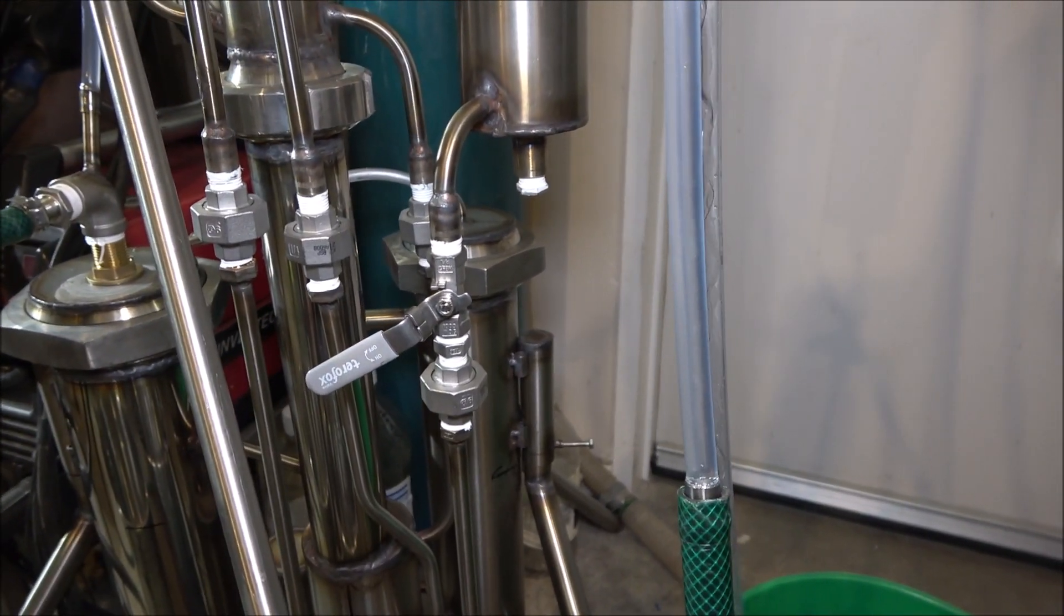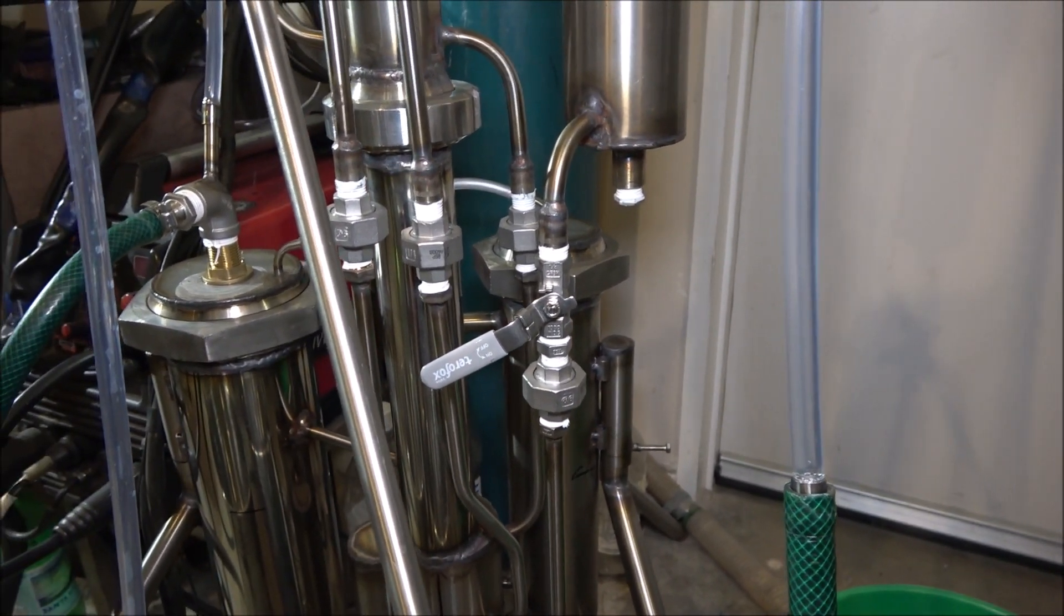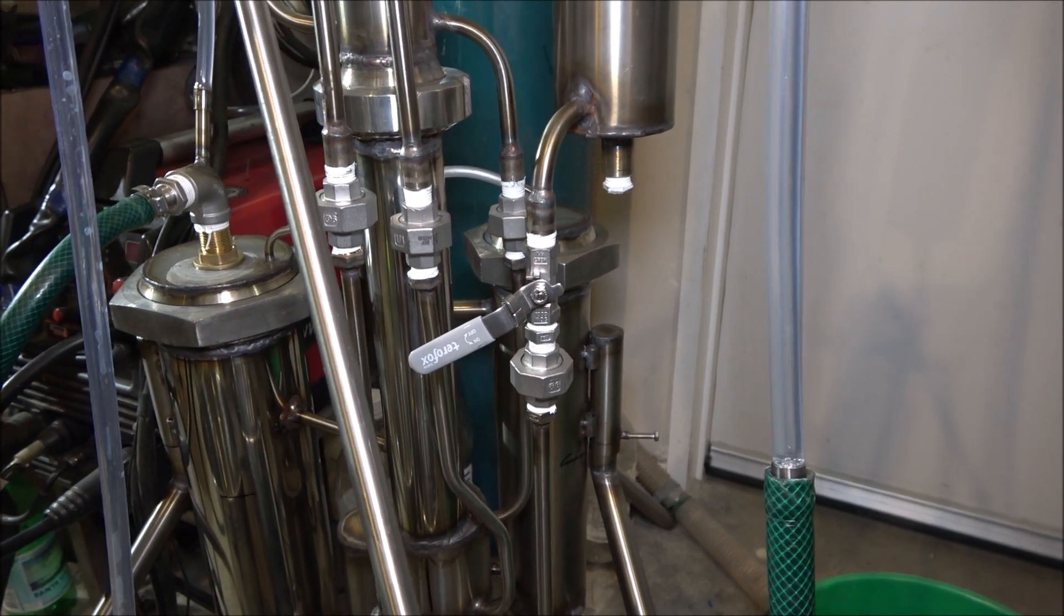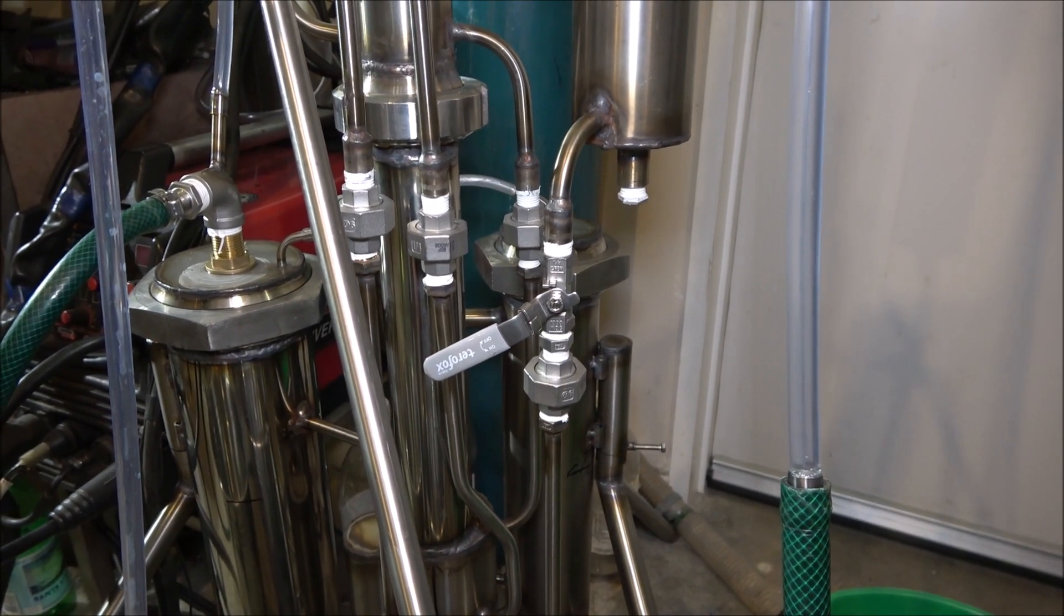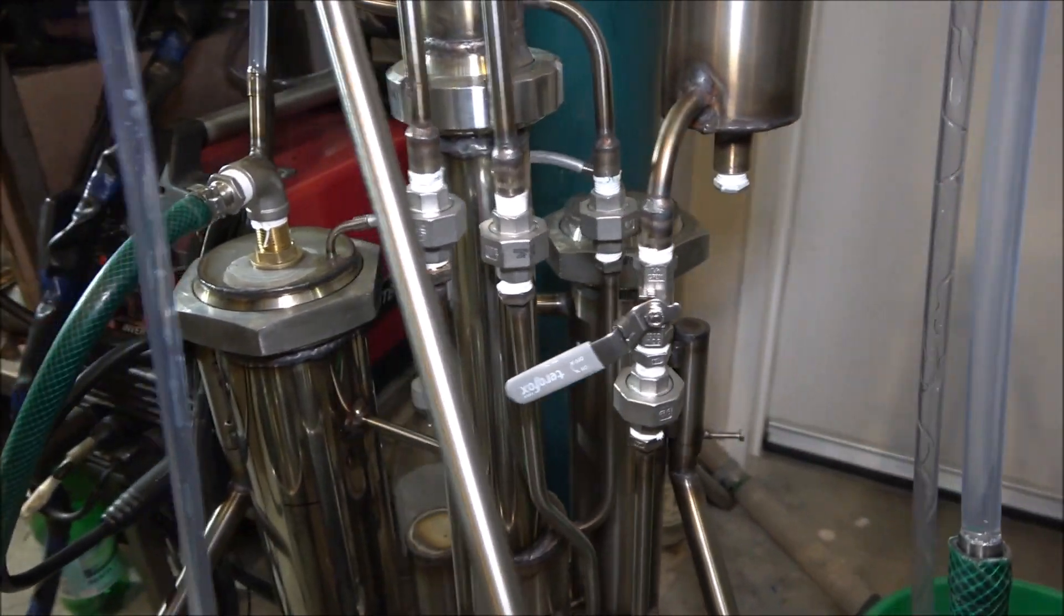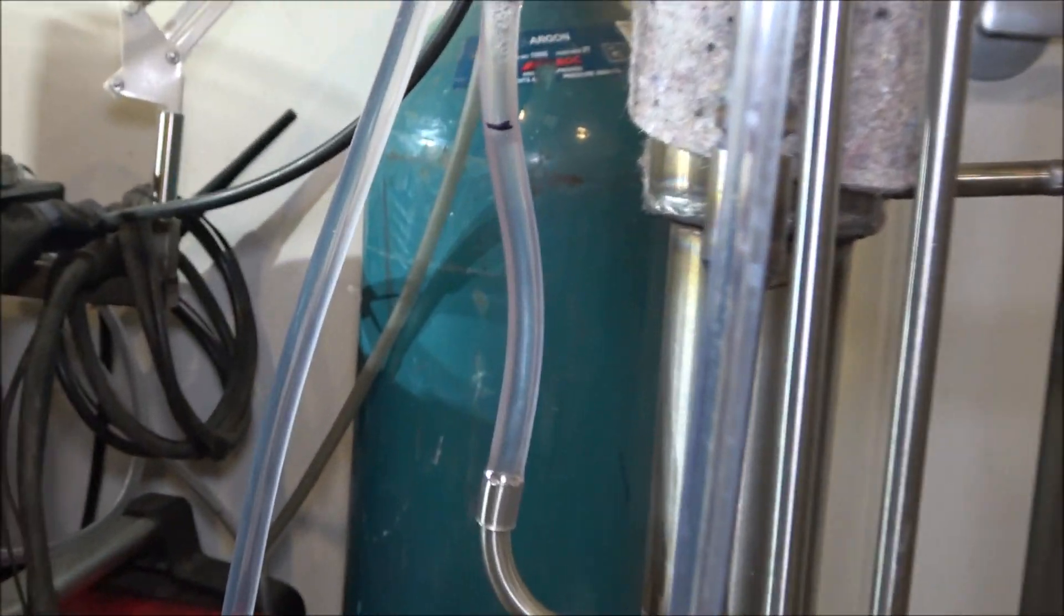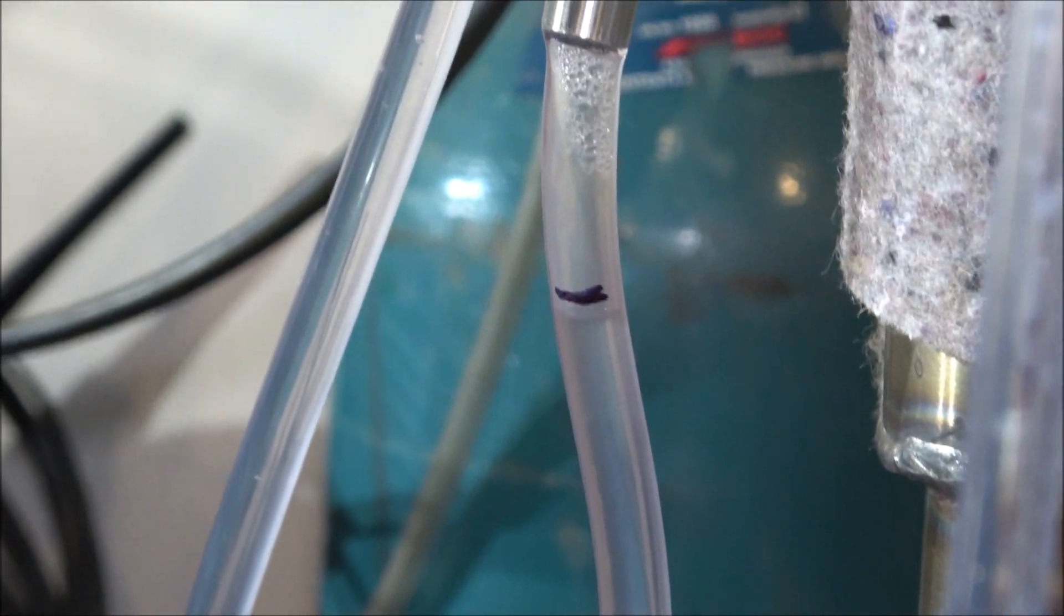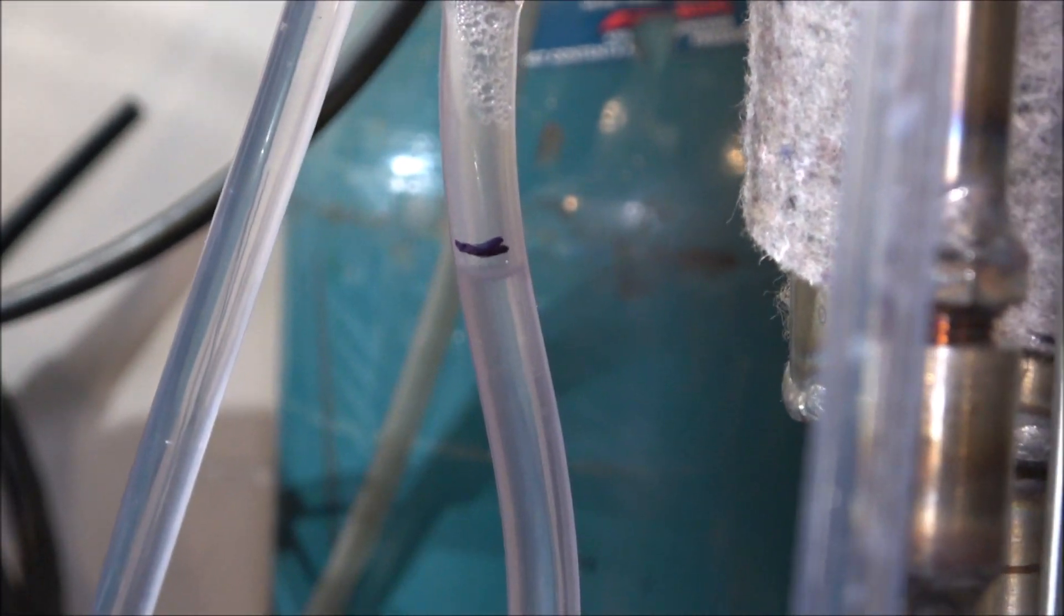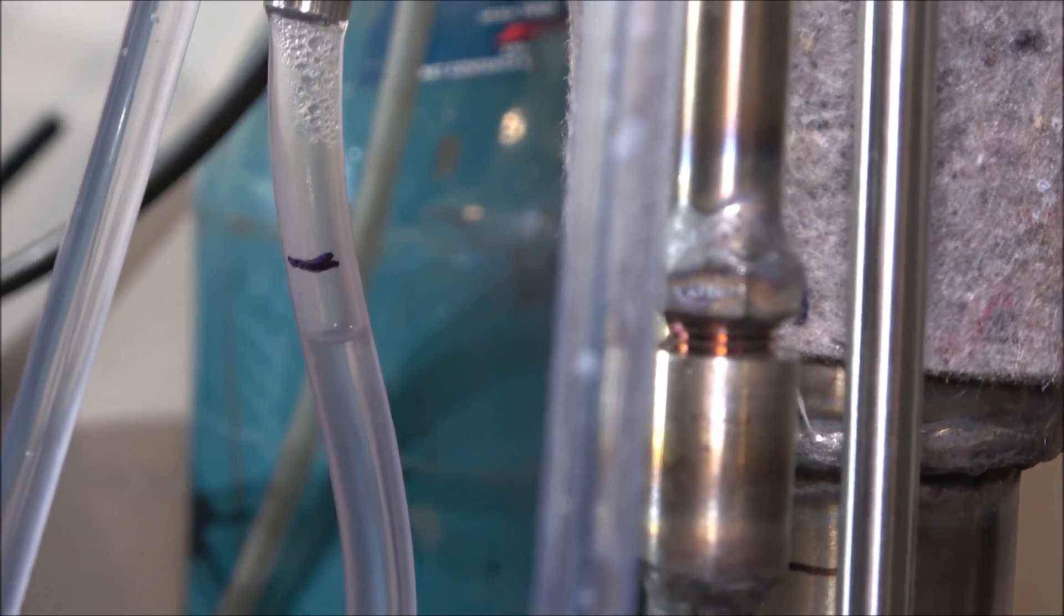Here is the one. Every time you start, the first thing is just to adjust the amount of wash that goes into the column. So I made a mark over here, just put a mark on the tube to know where the bloody thing is.